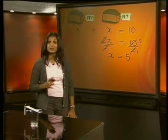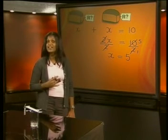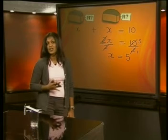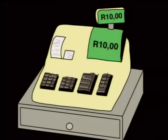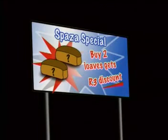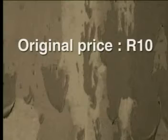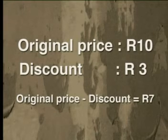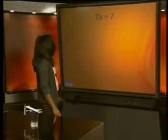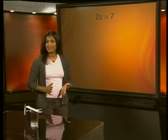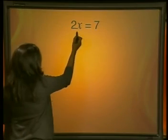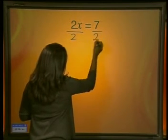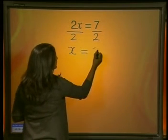Let's imagine the shopkeeper gives Sipo a discount of three rand for every two loaves of bread. Because Sipo is receiving a discount, he will now pay less per loaf than before. The original cost of two loaves was ten rand; subtract the three rand discount and the new price is seven rand. Therefore the new equation is 2x equals seven. To find one x, I divide the left-hand side by two and also divide seven by two to keep the balance. We get x equals three and a half.